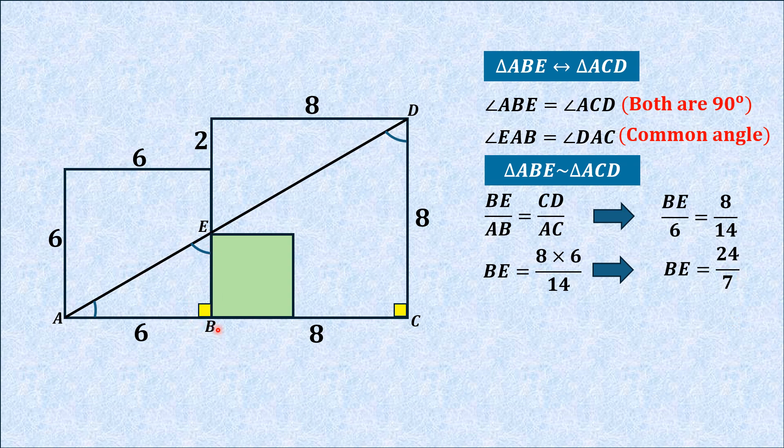The length BE is 24/7, which is the side length of the green shaded square. We know the area of a square equals the square of its sides, so the area of the green shaded region is BE squared, which equals (24/7) squared.